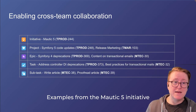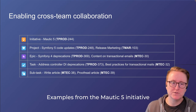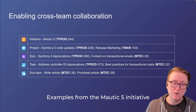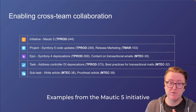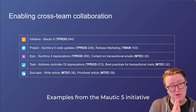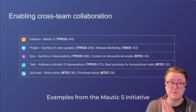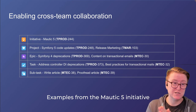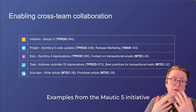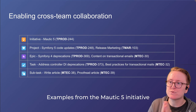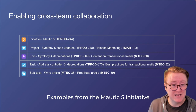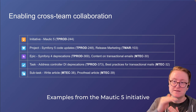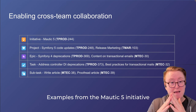Here's an example of how this enables cross-team collaboration. At the top level, we've got the Mortic 5 initiative, shown as TPOD — the product team issue. Within that, there are several projects: the Symphony 5 code updates (the changes required to go from Symphony 4 to Symphony 5), a marketing team project for release marketing to communicate the release to the community, and a documentation project to keep developer docs, end-user docs, and knowledge base articles up to date. So there are multiple projects across multiple teams under the same initiative.